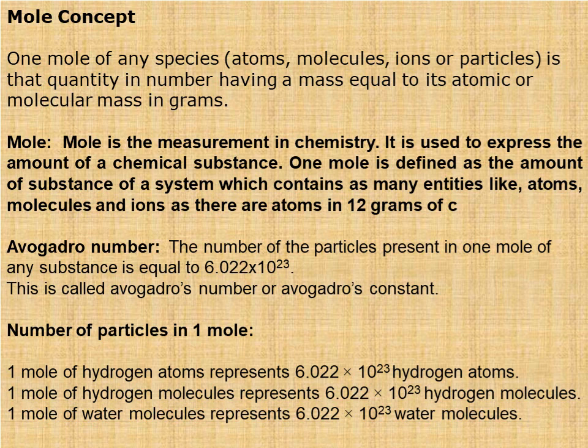Avogadro's number: the number of particles in one mole of any substance equals 6.022 × 10²³. Any substance — atoms, molecules, ions, or particles — contains 6.022 × 10²³ entities per mole. This is called Avogadro's number or Avogadro's constant.